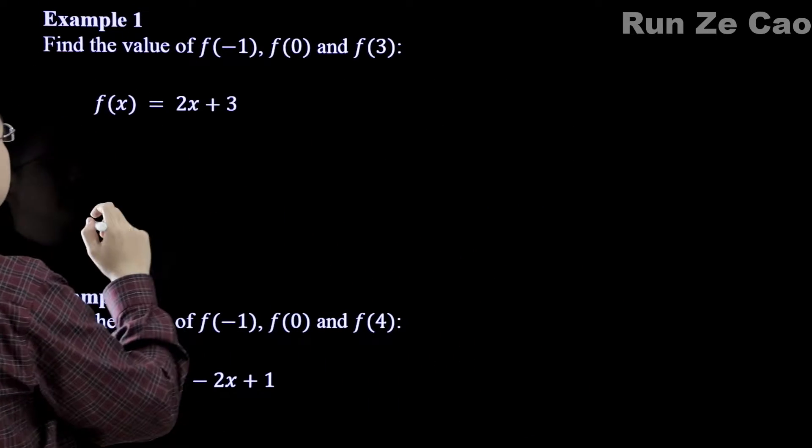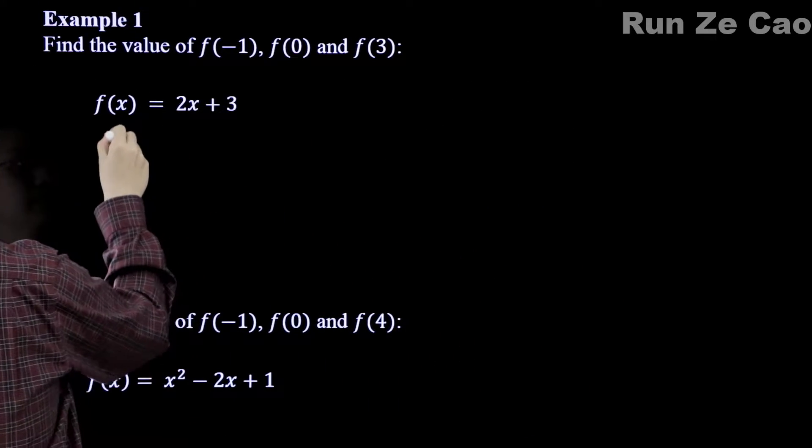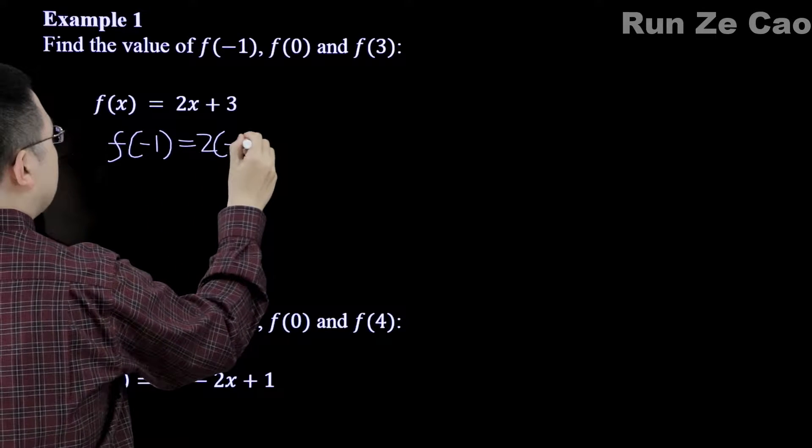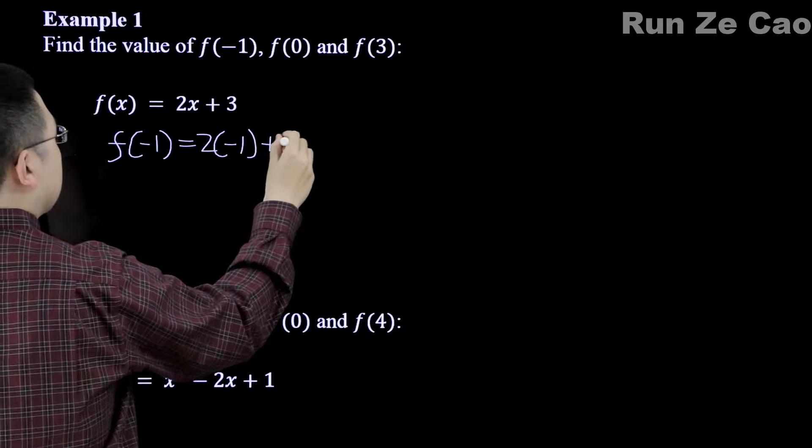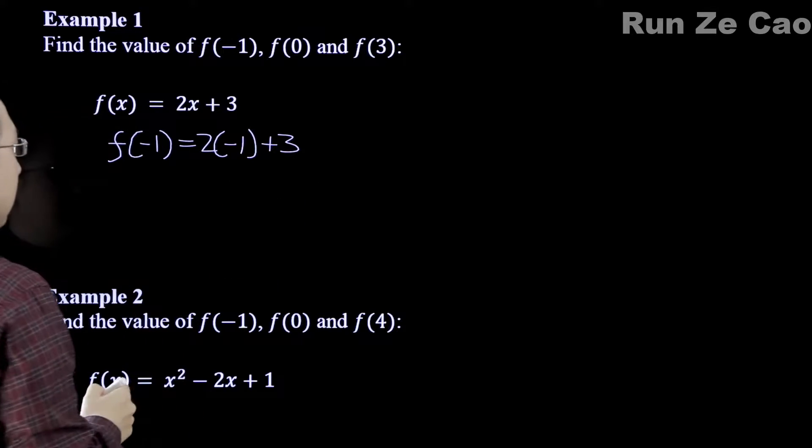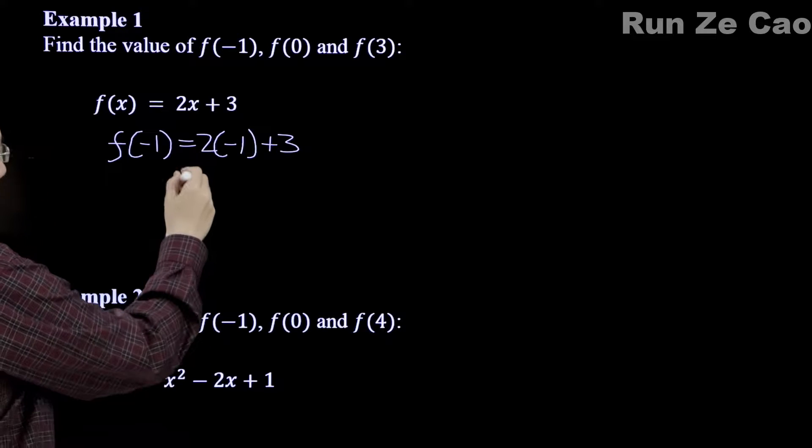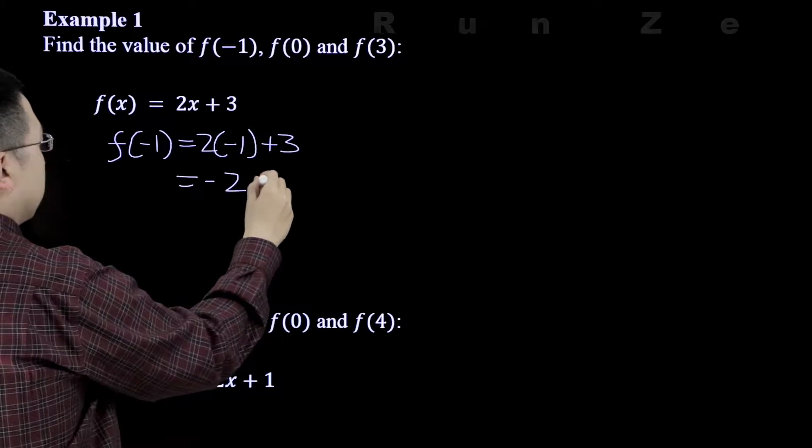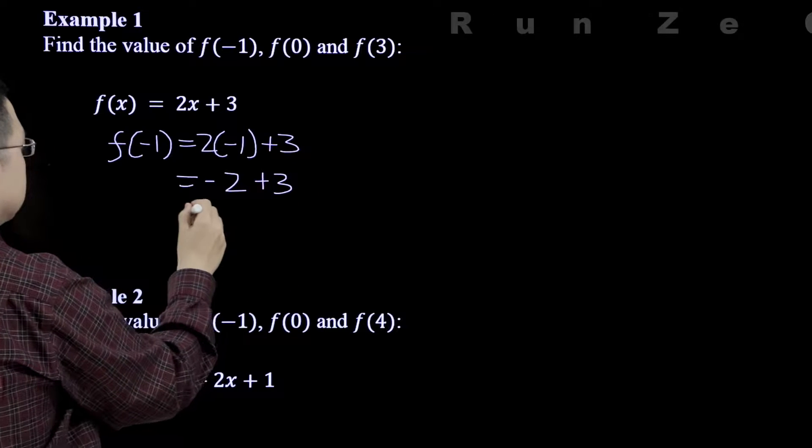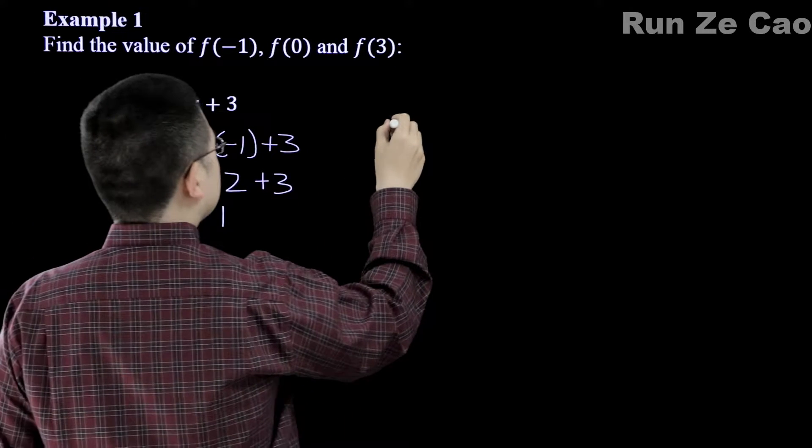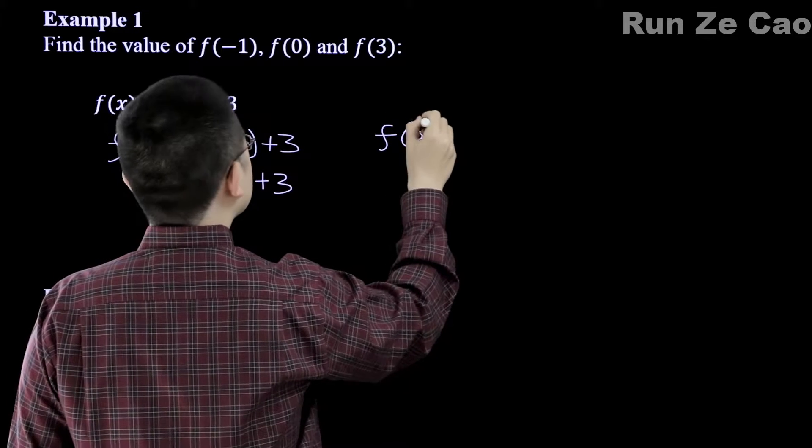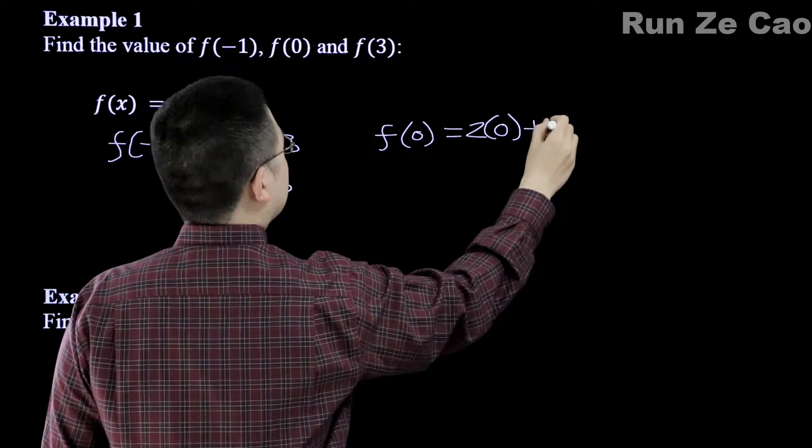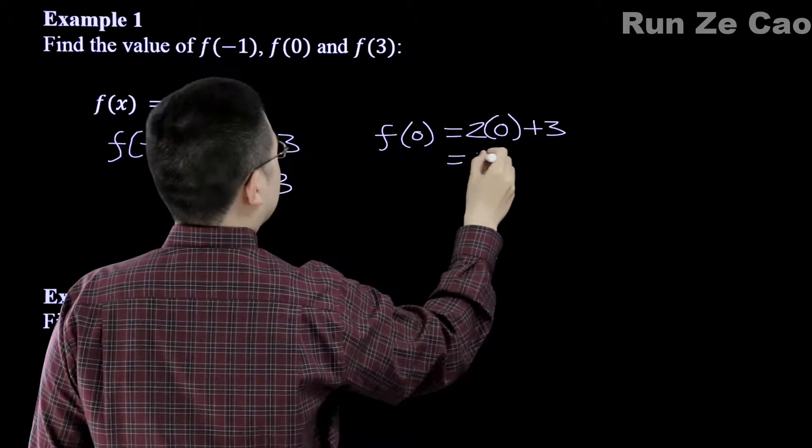So f(x) equals 2x plus 3, so f(-1) equals 2 times -1 plus 3, and this would be -2 plus 3, which is equal to 1.